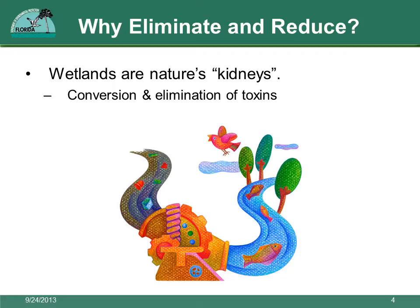Wetlands are nature's kidneys. Just as your kidneys scrub and eliminate toxins from your body, wetlands scrub and eliminate toxins from the environment. Stormwater runoff laden with pollution from roads, lawn fertilizers, and other pollutants flows directly into wetlands, where wetland plants and bacteria found in the wetland soils act as filters. The plants and bacteria take up excess nitrogen, phosphorus, and other pollutants from the water, and in some cases transform the pollutants to different chemical forms that are less toxic to fish and wildlife.